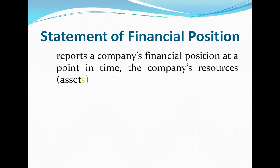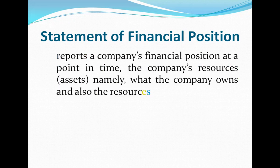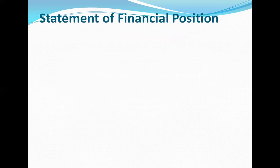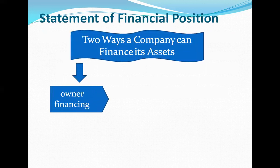The statement of financial position reports a company's financial position at a point in time — the company's resources, the assets namely what the company owns, and also the resources of asset financing. In the statement of financial position, there are two ways a company can finance its assets. First is through owner financing, which means that the company can raise money from the shareholders.